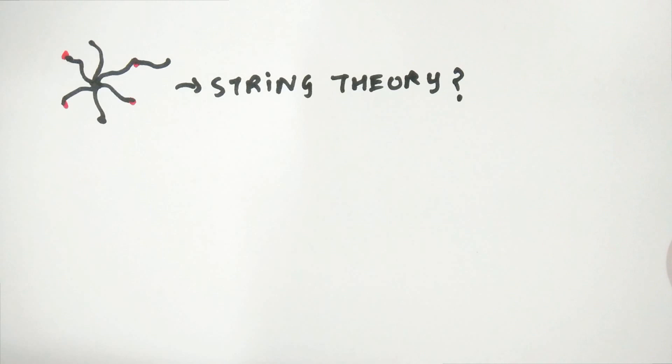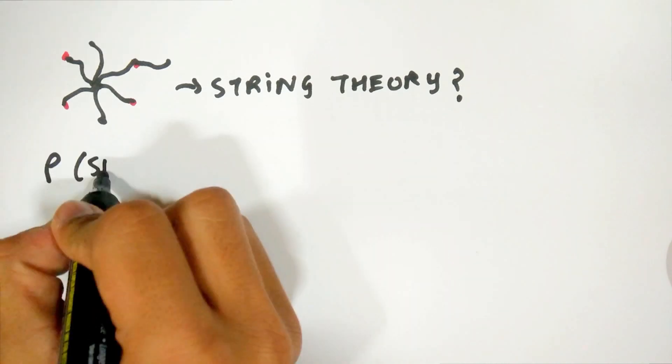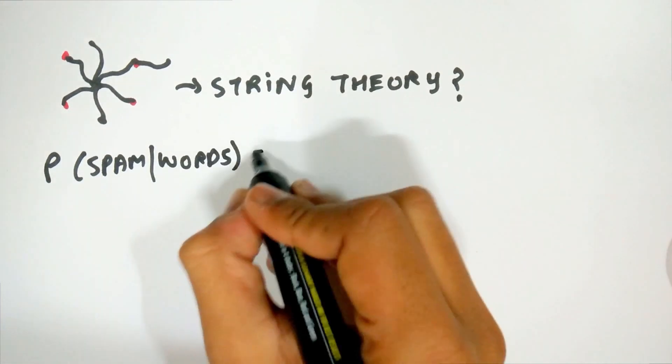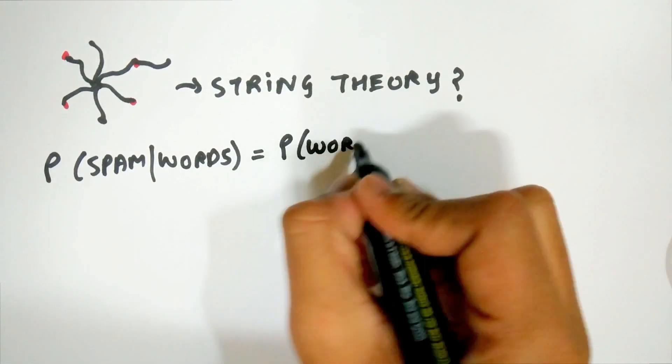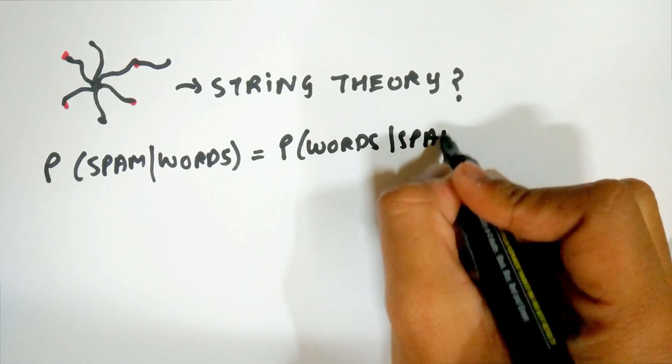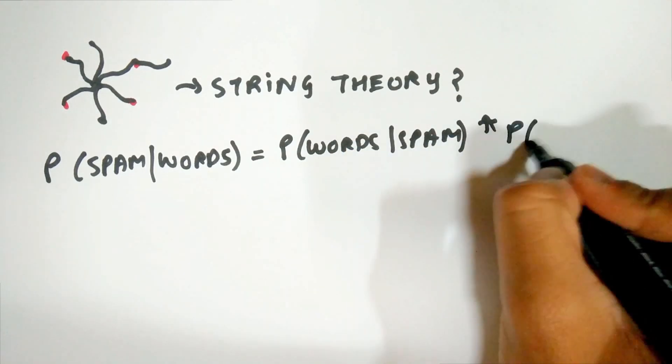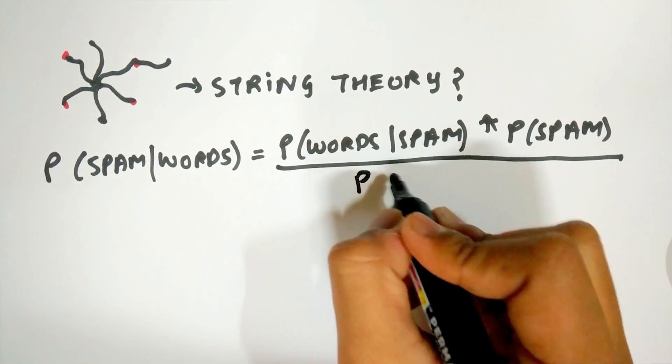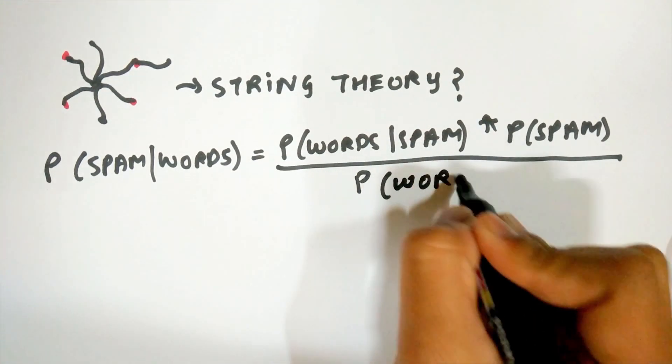Modern spam filters also work on Bayes' theorem to detect spam email. The probability that an email is spam if it has certain words like lottery or win is equal to the probability of the words being contained in a pre-identified spam email times the probability of the email being spam divided by the probability of the words being used randomly in any email.